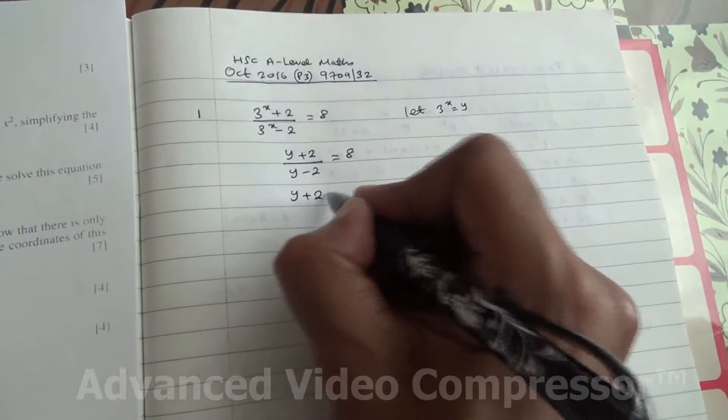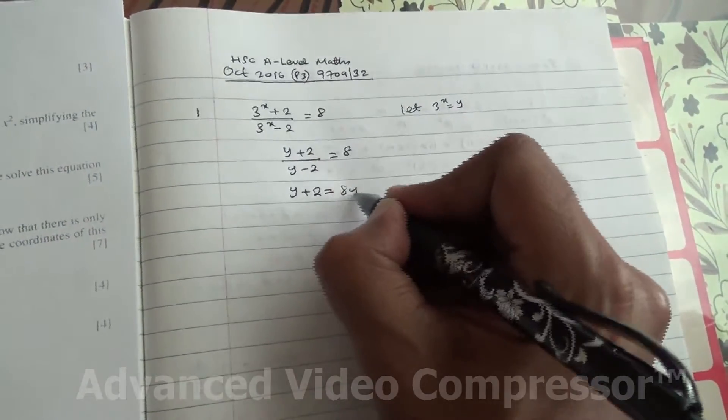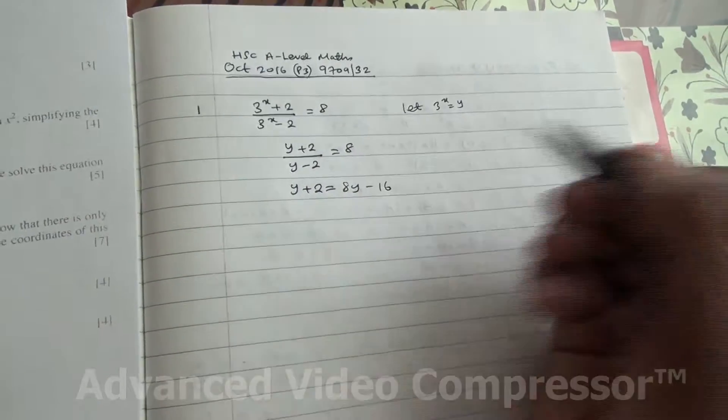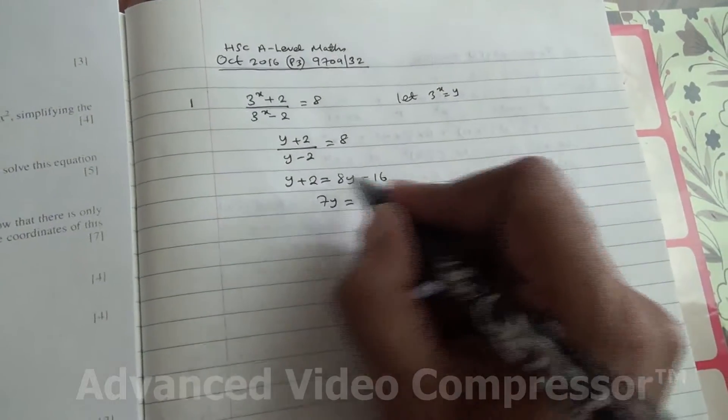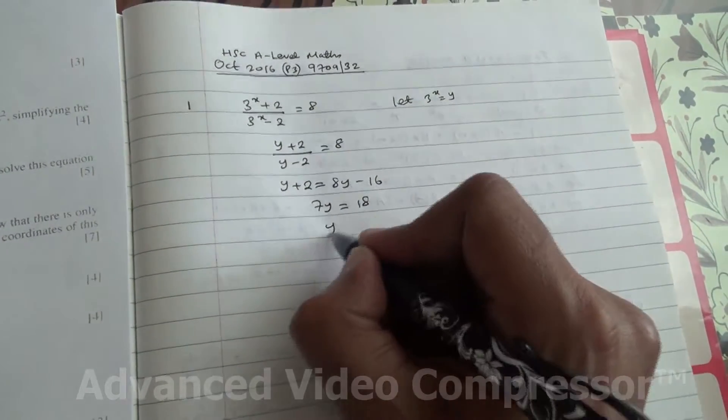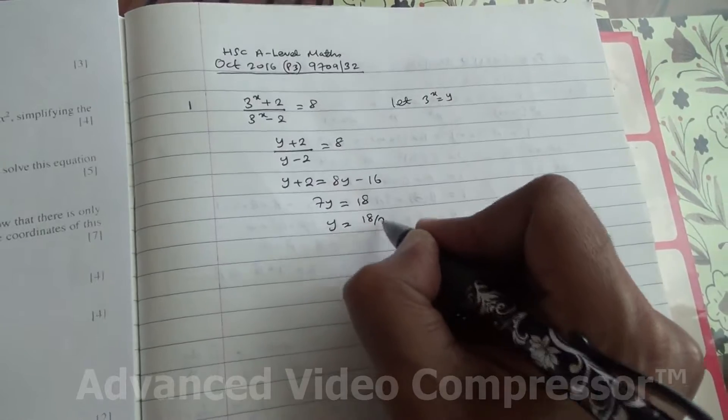In other words, y plus 2 is equal to 8 times y, which is 8y. 8 times minus 2 is minus 16. 8y minus y is 7y is equal to 16 plus 2 is 18. So we've got y is equal to 18 over 7.